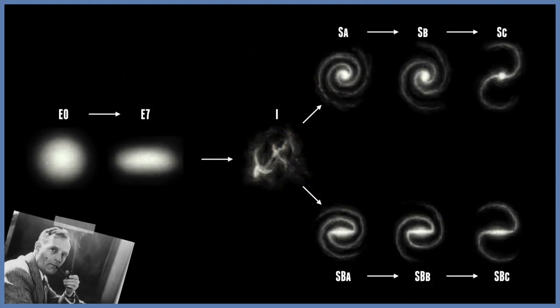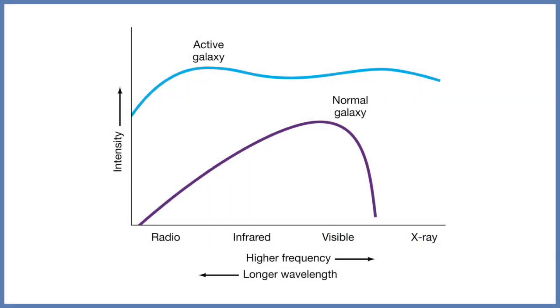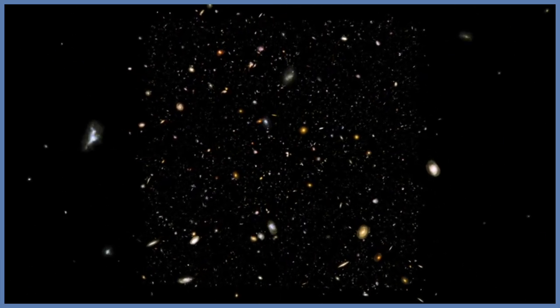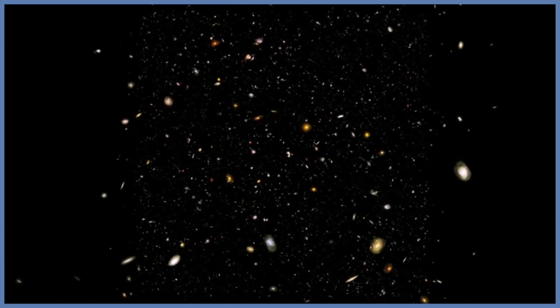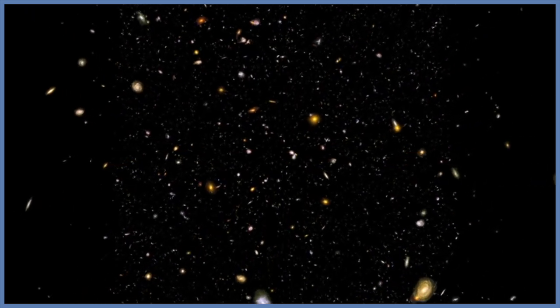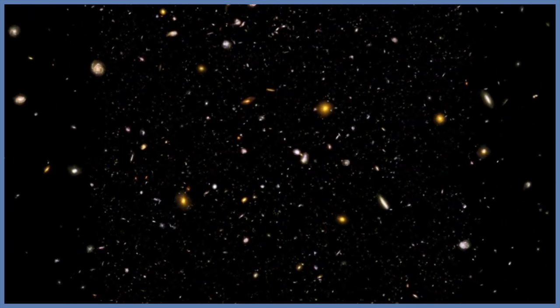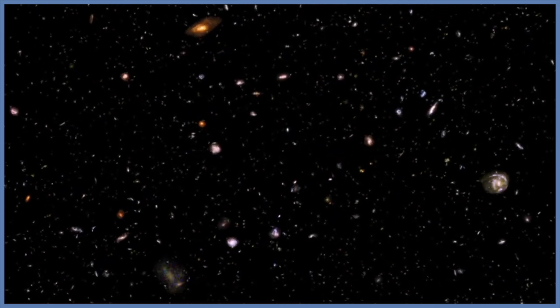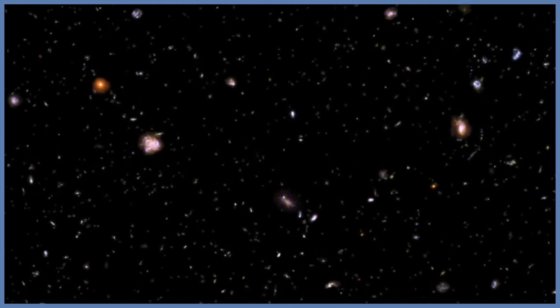Over the years, the Hubble classification has had modifications and additions. One of these modifications considers where arms spiral outward from a ring of stars, and other additions consider a spiral galaxy's total brightness instead of just how it looks. These changes allow astronomers to know a lot more about the properties of galaxies — how they were created, how they evolve, and how they will eventually die. Future astronomers will of course make additional changes, giving us a greater understanding of how galaxies play an important part in the evolution of our universe.